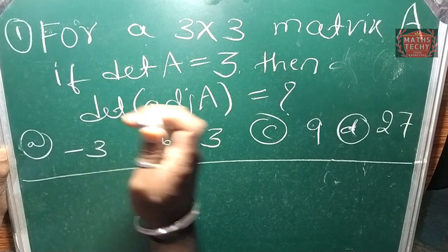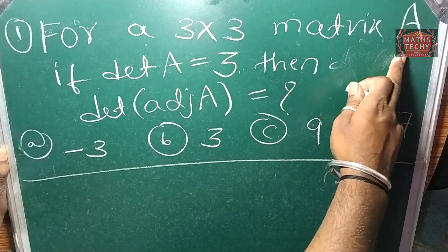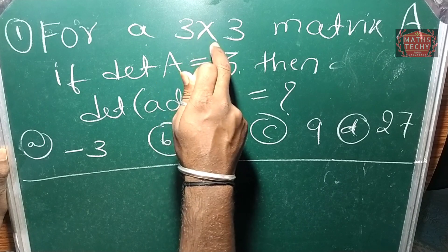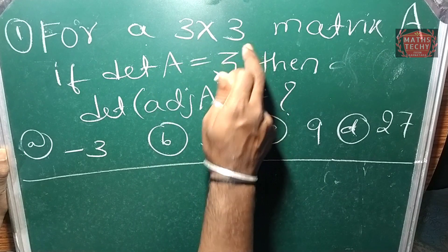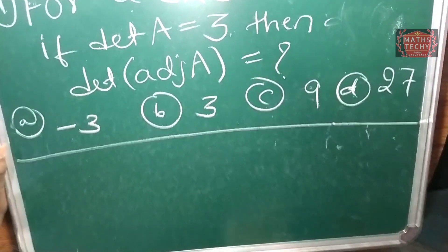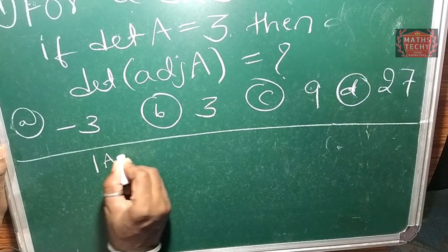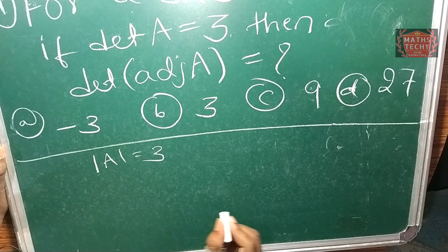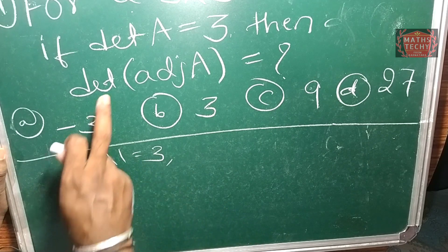For a 3 by 3 matrix A, the matrix has an order of 3 by 3 - three rows and three columns. The determinant of A is equal to 3. Then, what is the determinant of adjoint A equal to? We need to find the determinant of adjoint A.